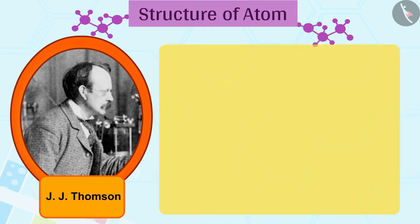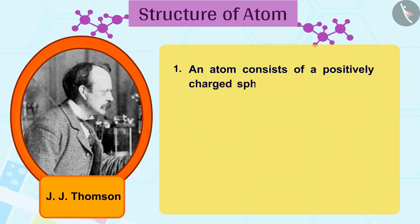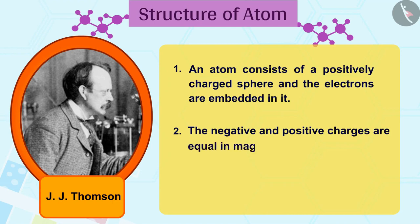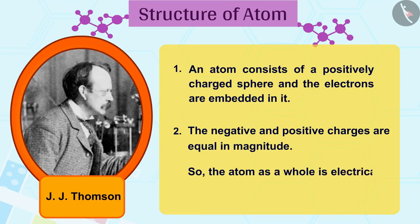Thomson proposed that: 1. An atom consists of a positively charged sphere and the electrons are embedded in it. 2. The negative and positive charges are equal in magnitude so the atom as a whole is electrically neutral.